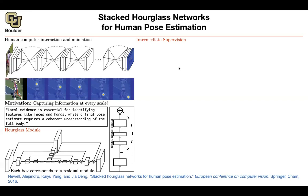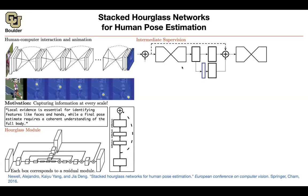At the same time, you're going to do intermediate supervision. Whenever your hourglass stage is finished — maybe after the first stage — you supervise it. Then you have another loss at the next stage, another loss after that, and another at the end. These are all mean squared error losses, comparing the predicted heat map to the ground truth heat map, which you obtain using Gaussians.